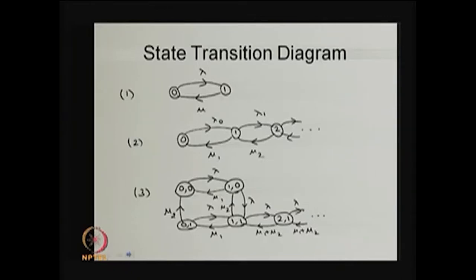The continuous amount of time the system spends in states 0 and 1 is exponentially distributed with the parameters discussed earlier. Now I am moving into the second example. In the second example the state space is countably infinite, and the time the system spends in state 0 before moving into state 1 is exponentially distributed with parameter lambda-naught.